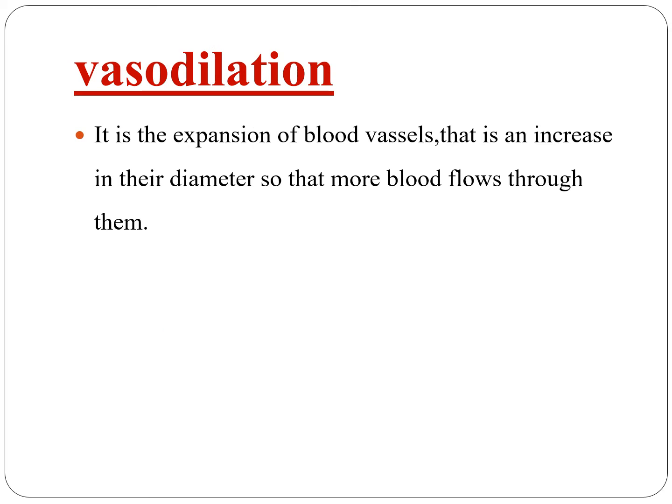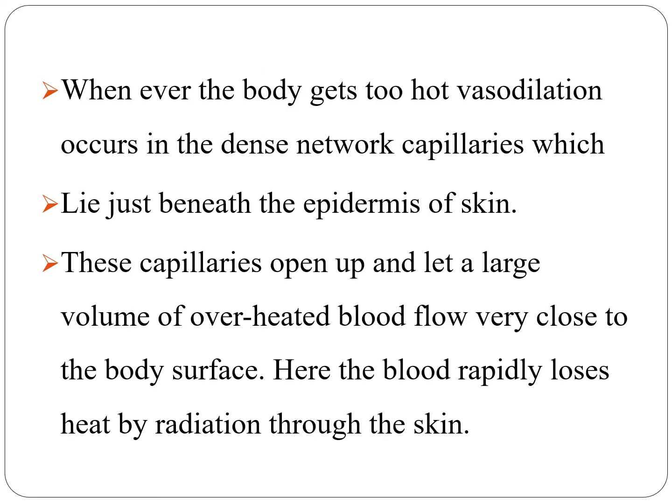Viso-dilation is the expansion of blood vessels — an increase in their diameter so that more blood flows through them. Whenever the body gets too hot, viso-dilation occurs in the dense network of capillaries which lie just beneath the epidermis of the skin. These capillaries open up and let a large volume of overheated blood flow very close to the body surface, where the blood rapidly loses heat by radiation through the skin.